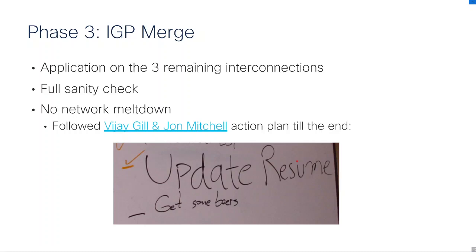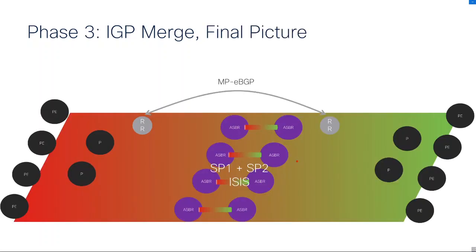We continued the plan — deploying ISIS and LDP on the three remaining interconnections, performed a full sanity check to make sure everything was working fine. Everybody was expecting a network meltdown — actually two on SP1 and one on SP2 — and it just worked. We followed the IOL guys' plan until the end, and after this big maintenance window we enjoyed some well-deserved beers with colleagues and the customer. The final picture: one single IGP covering both SP1 and SP2, with MP-eBGP multi-hop sessions between route reflectors still in place. We now have a 1000-node IGP network and an emerged B2B backbone.